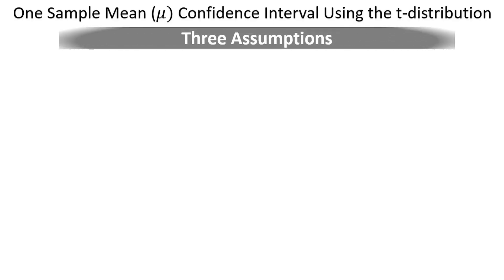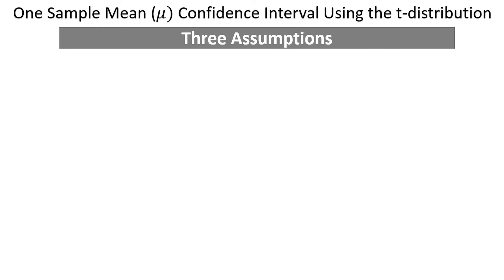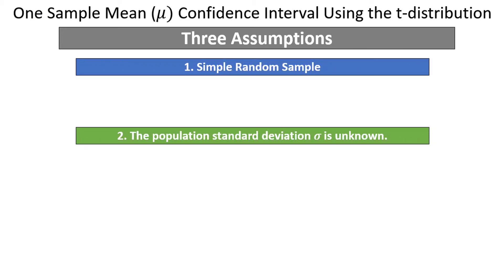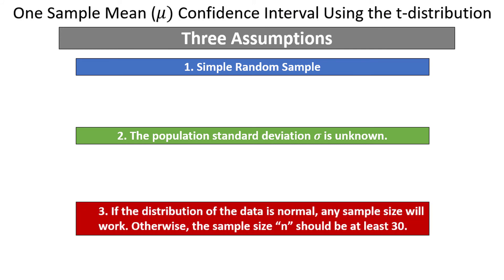Let's get into the assumptions needed to use the t-distribution to calculate one-sample confidence intervals for the mean. First, we must have a simple random sample. The value of the population standard deviation sigma must be unknown — if it were known, we would use the z-distribution. If the distribution of the data is normal, any sample size will work; otherwise the sample size n should be at least 30, so that the central limit theorem will apply, meaning the distribution of x-bar will be approximately normal.